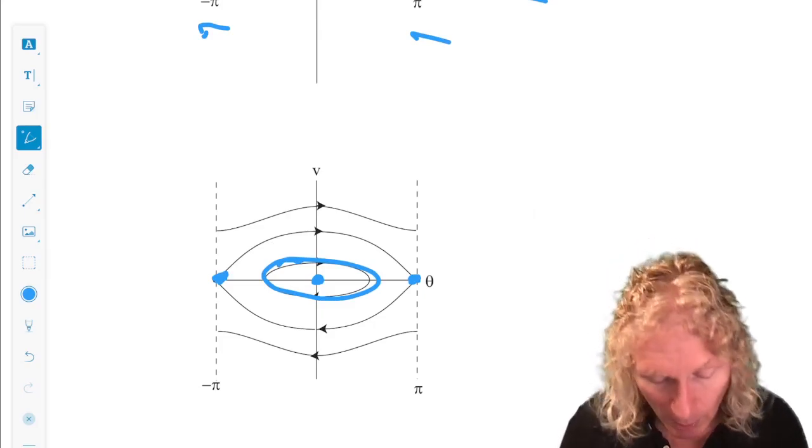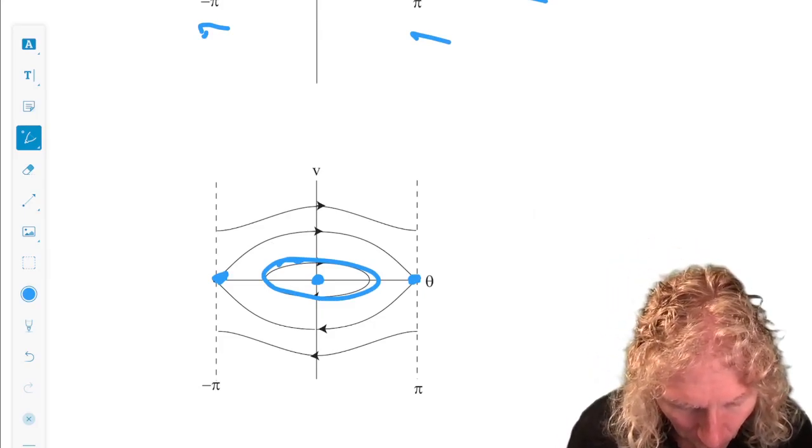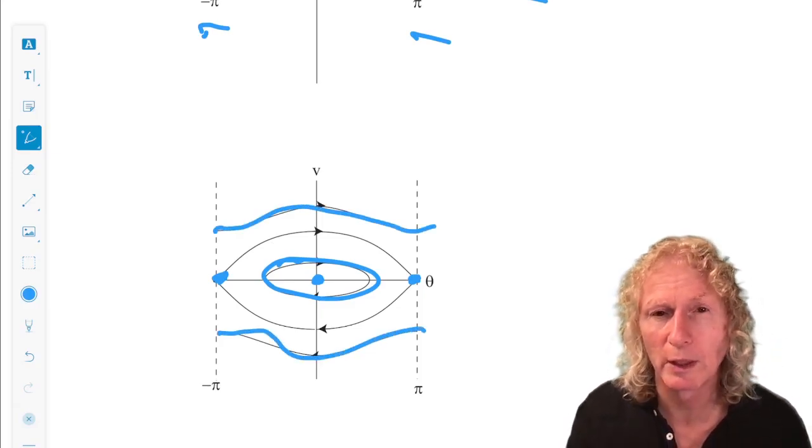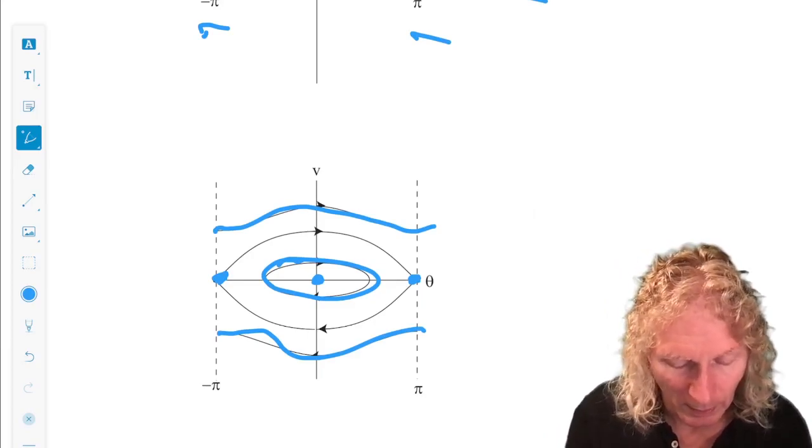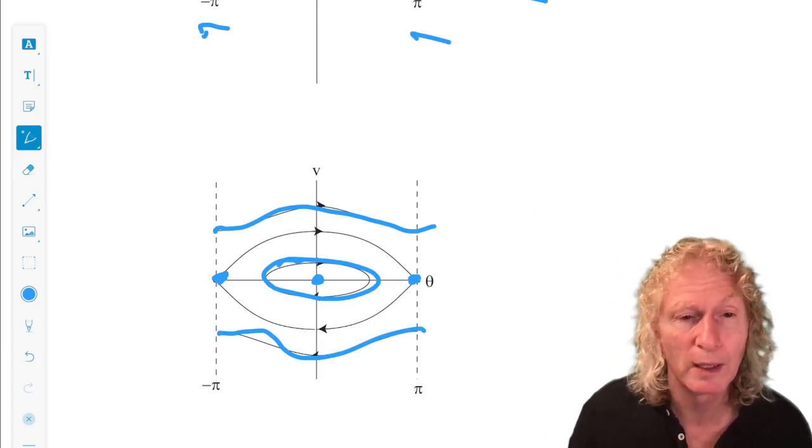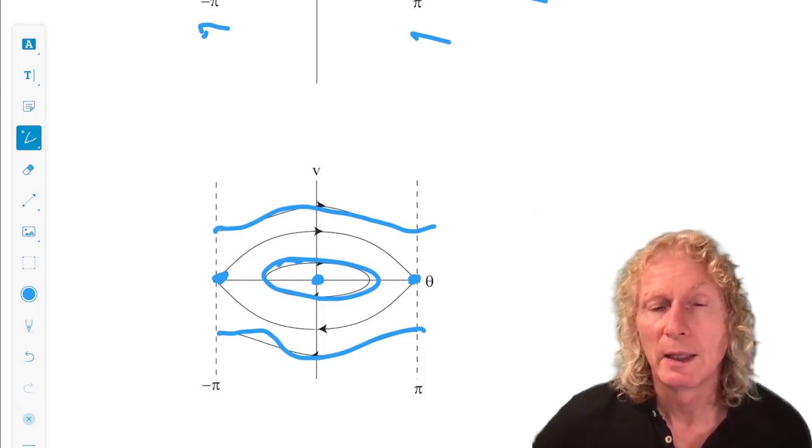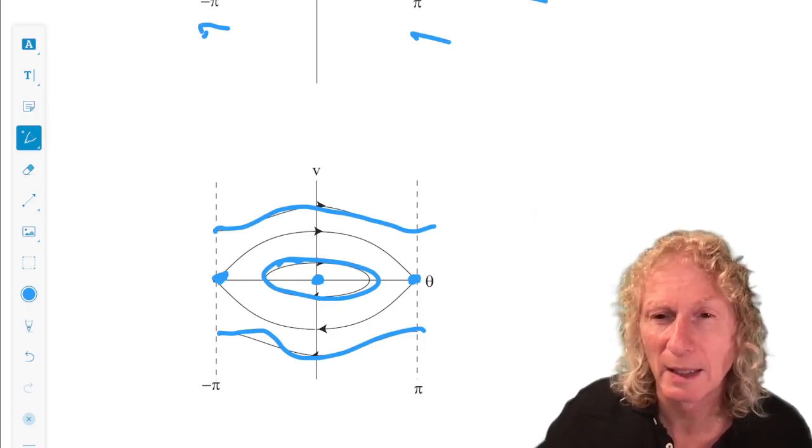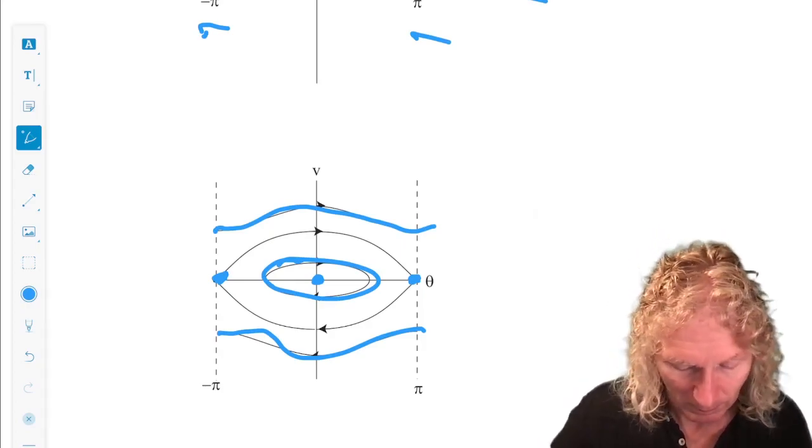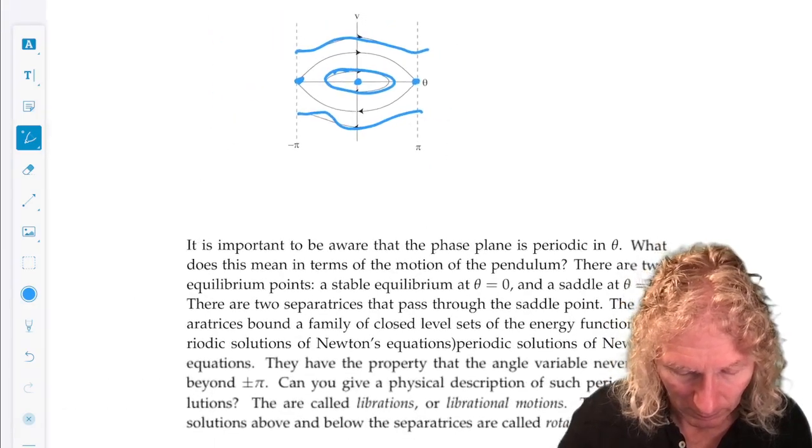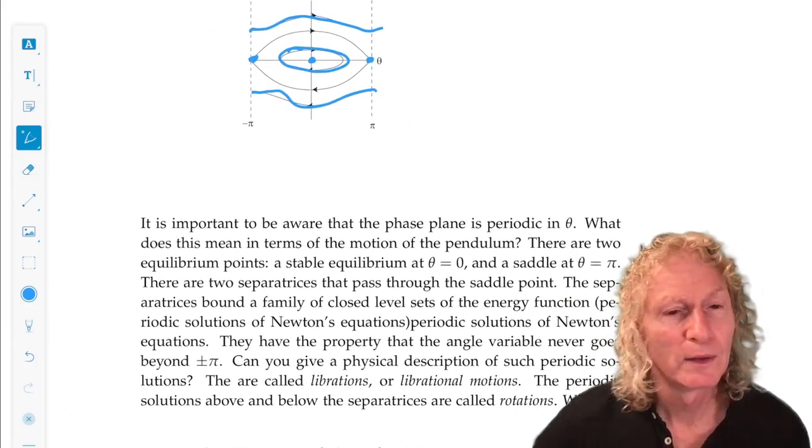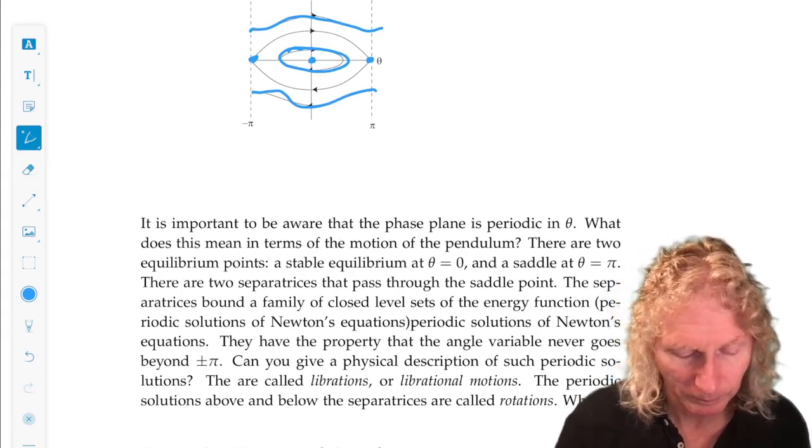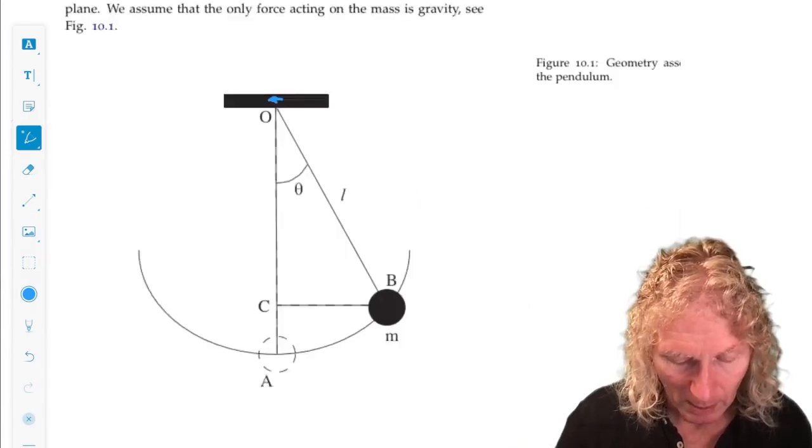The two families of periodic orbits outside the separatrices are called rotations. One family rotates all the way around through pi in a clockwise sense. The other family rotates all the way around through pi in a counterclockwise sense. This tells us everything about the possible behavior of the simple pendulum.